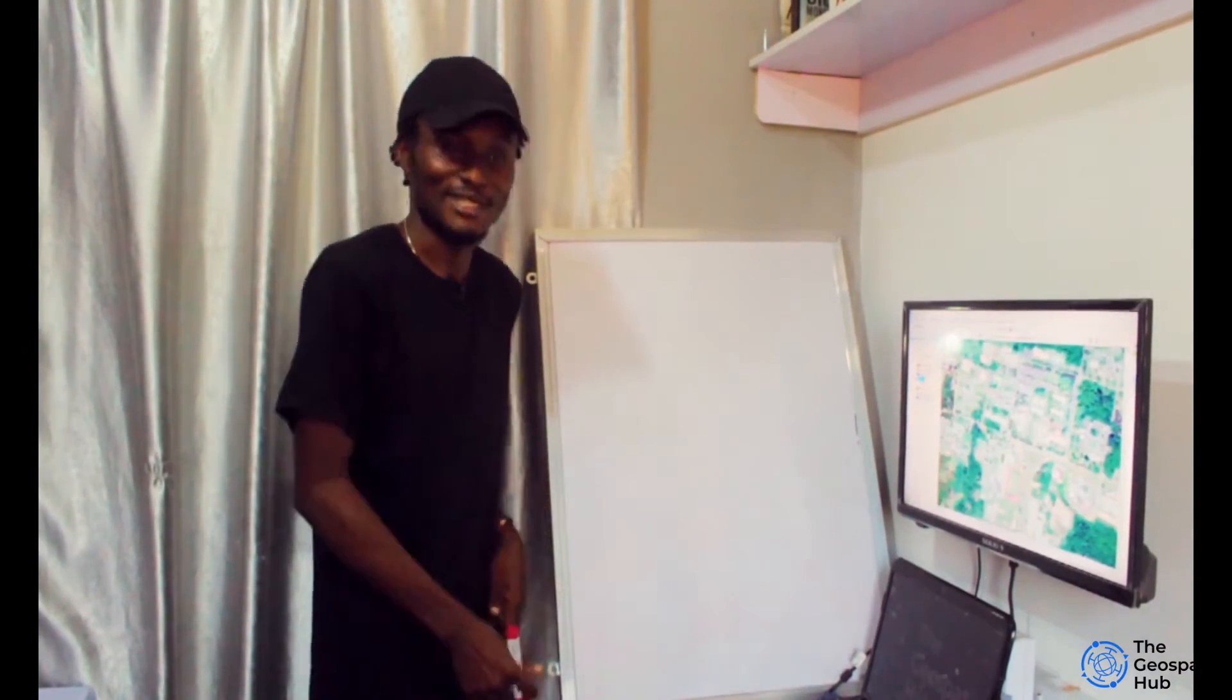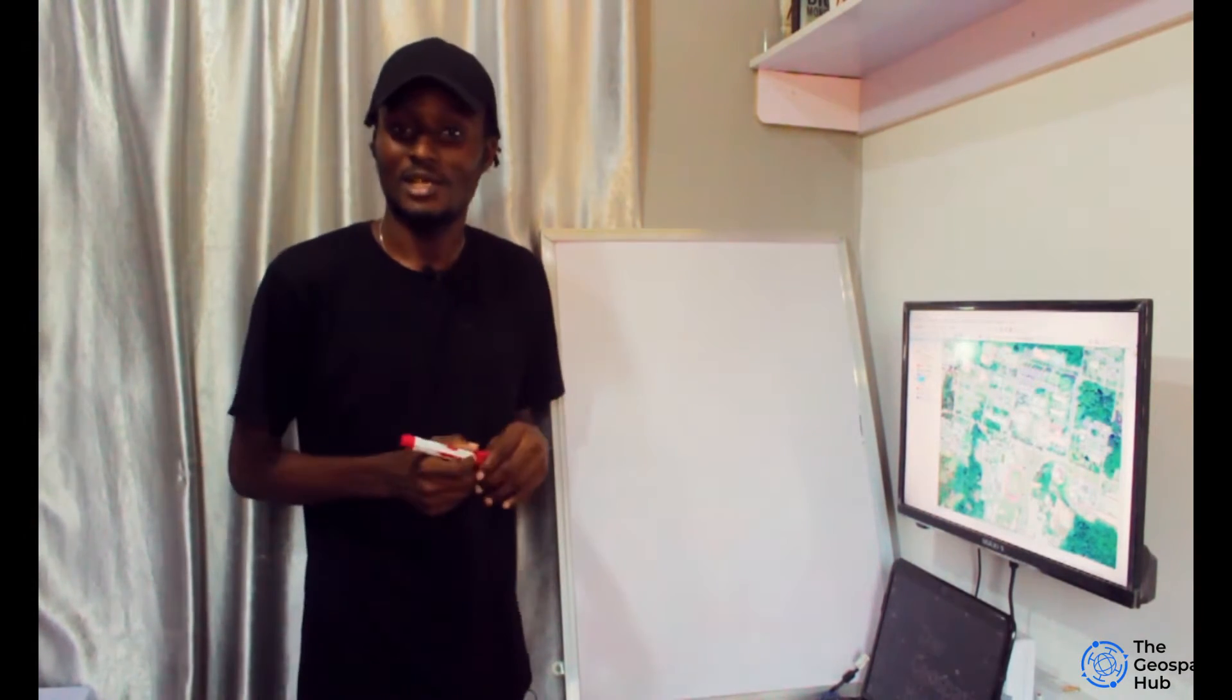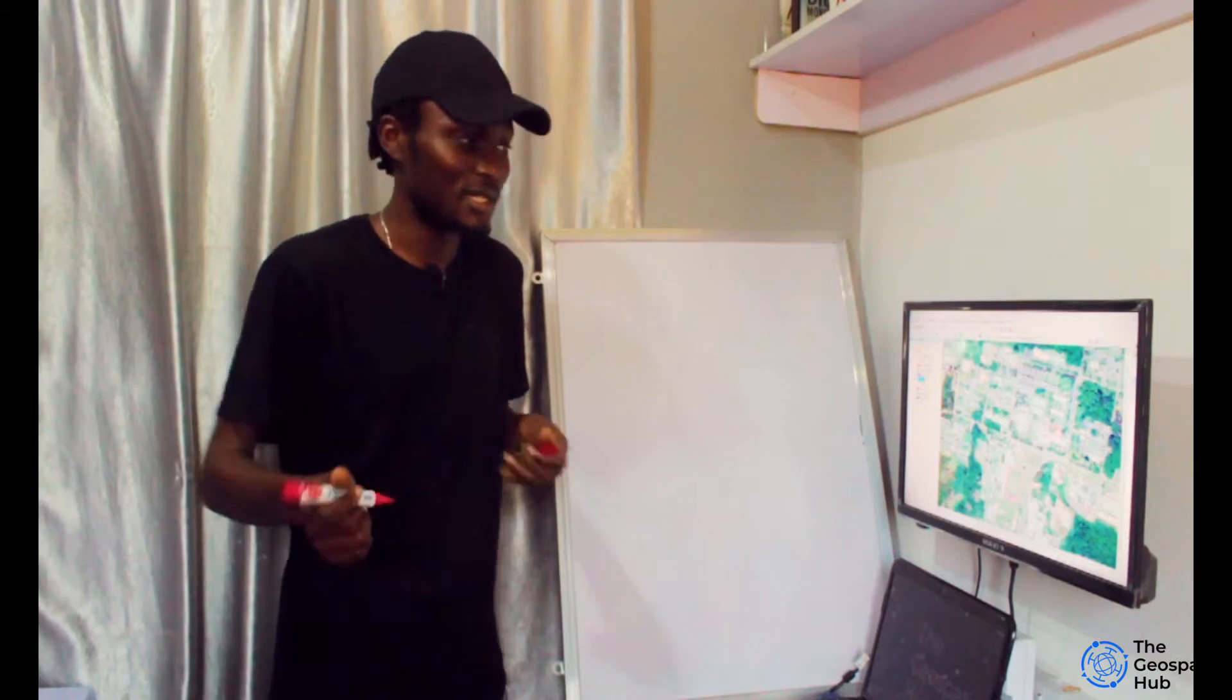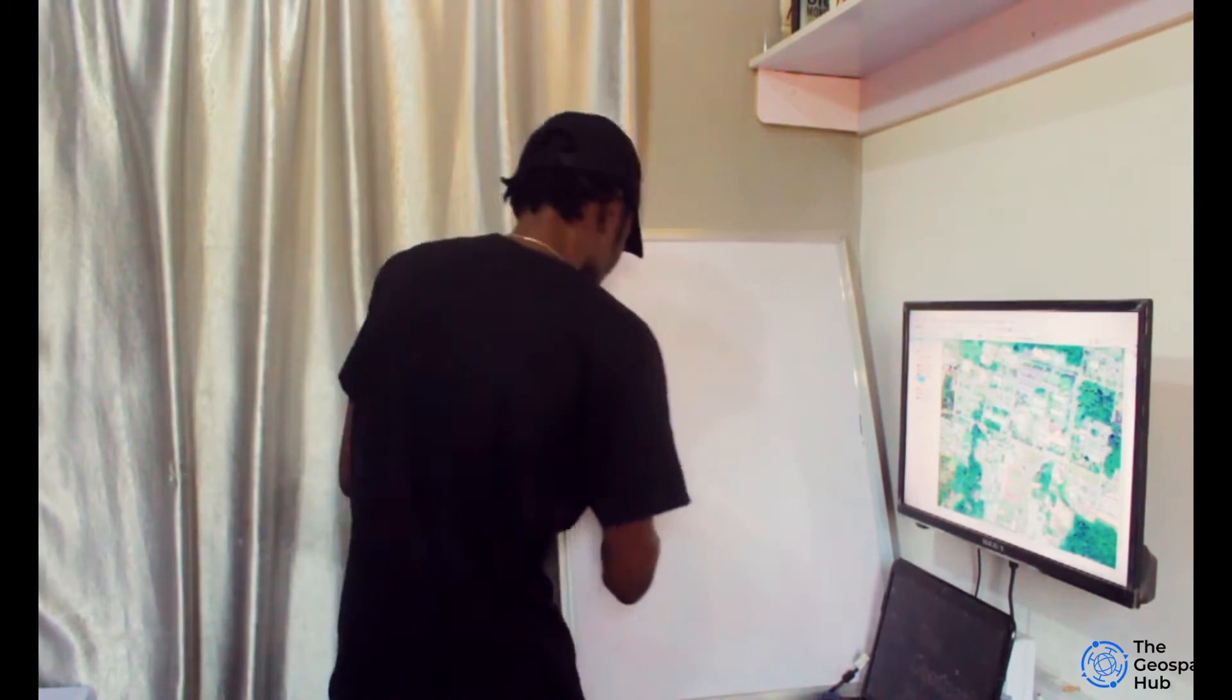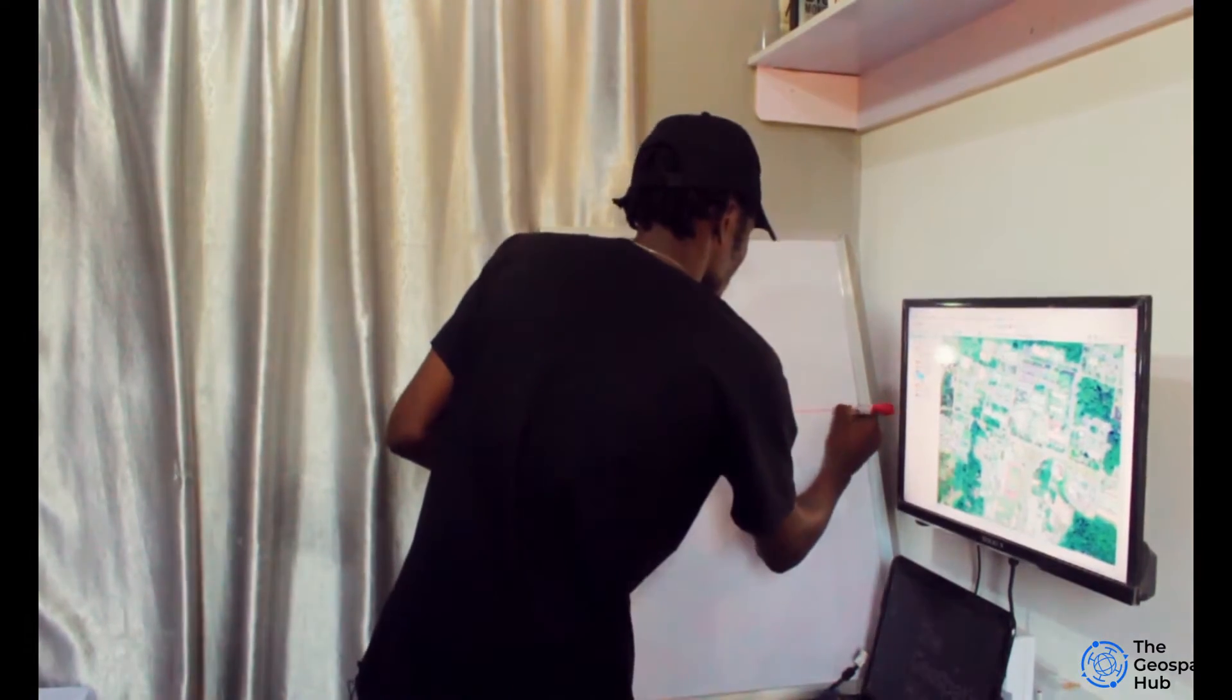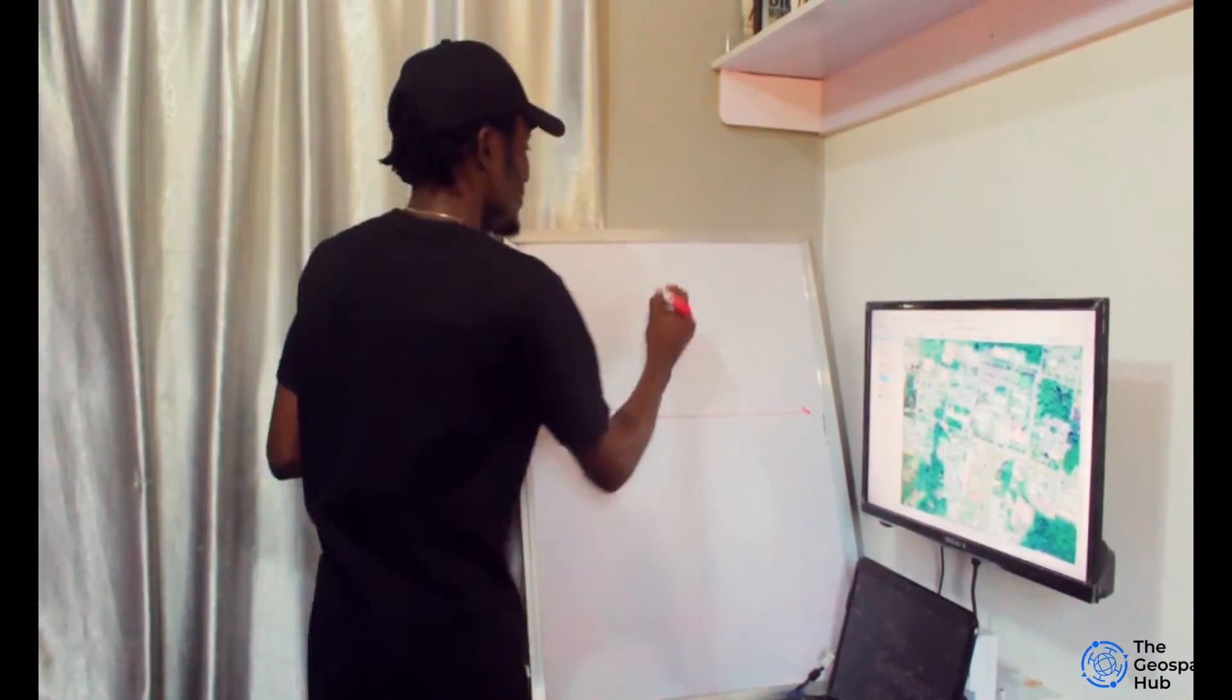Welcome to my whiteboard. First, we'll review the Cartesian plane coordinate system. We're talking about X and Y. We have the X axis, which is the horizontal line, and we have the Y axis.